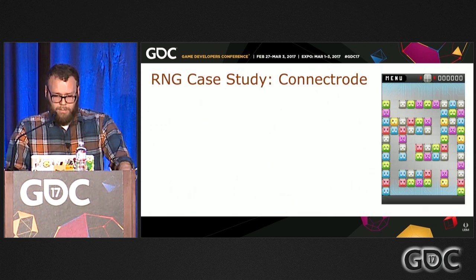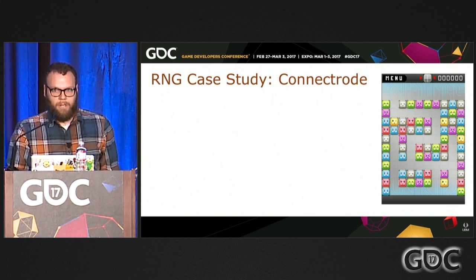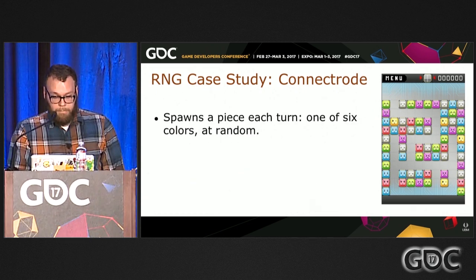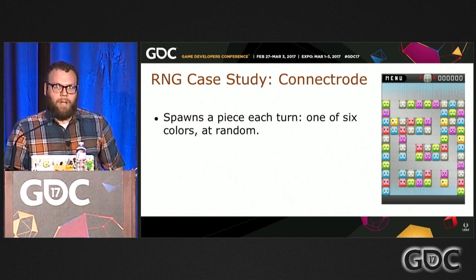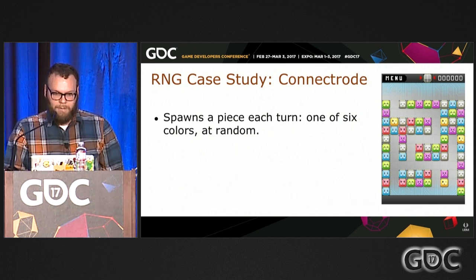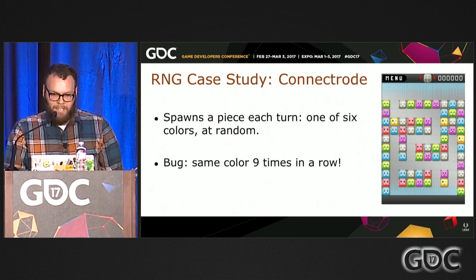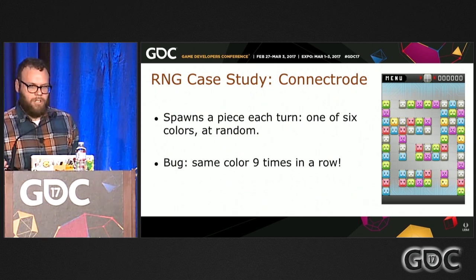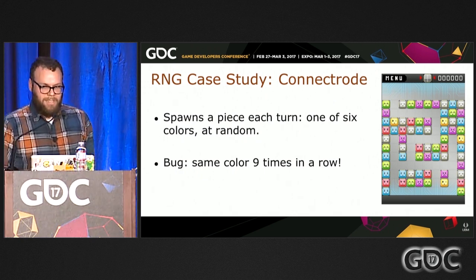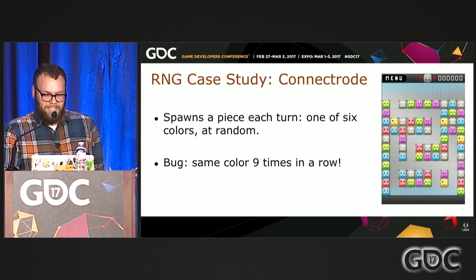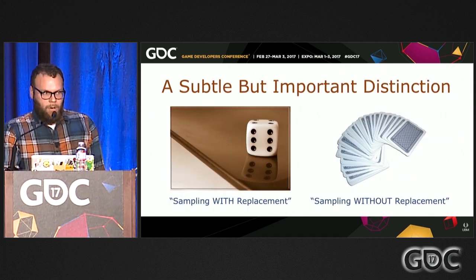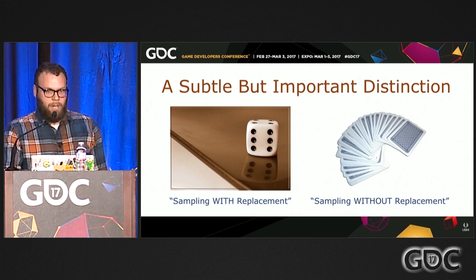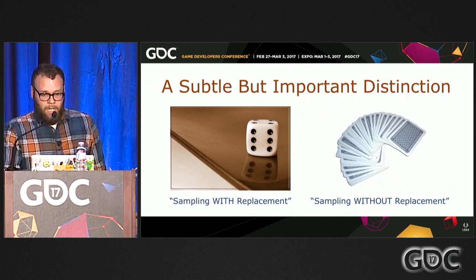Let's get into using RNG, starting with something pretty basic about the types of problems you typically have to solve as a gameplay programmer. I made a game called Connectrode, a puzzle game. My wife was playing the prototype back in 2011 and came to me with a big complaint. It's a Tetris-style game that spawns a random piece each turn. She was yelling one night that she had gotten the same piece nine times in a row, so I needed to fix that — the same way Tetris fixes it, using what's sometimes called bagging.